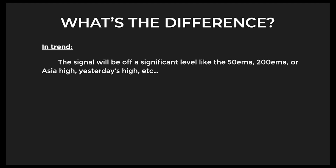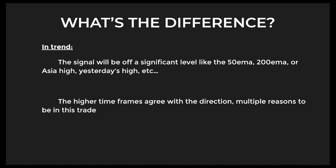The in-trend trades are going to be off significant levels — whether it's the 50 EMA, 200 EMA, yesterday's high, Asia high, something like that. It's going to be off a significant level, and the higher timeframes are going to agree with the direction, so you're going to have multiple reasons to take that trade. You'll use the L50 and the EMAs to help dictate the direction of trend. If you can find a perfect L50 in the buy zone with perfect EMAs telling you to go long, you're going to use significant levels — yesterday's high, yesterday's low, the 50 EMA, or the 200 EMA — to look for longs in the direction of the overall trend. If higher timeframes agree, you'll have a really solid D1 trade that can possibly run for multiple days.